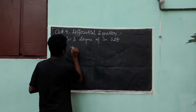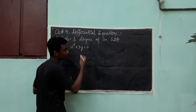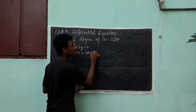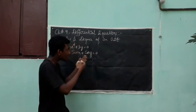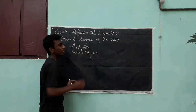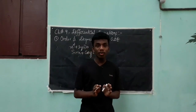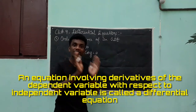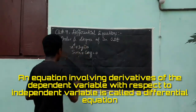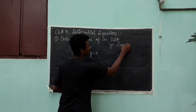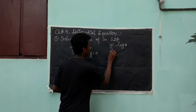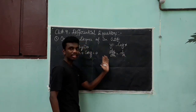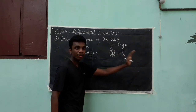For example, x² + 3y = 0 is one equation. sin(x) + cos(y) = 0 is another. A differential equation contains a derivative. For example, if y = log(x), then dy/dx = 1/x. That equation is a differential equation. So, dy/dx + d²y/dx² - x = 0 is also a differential equation.